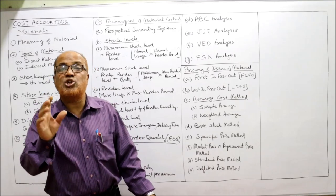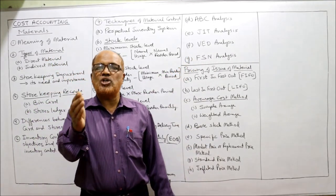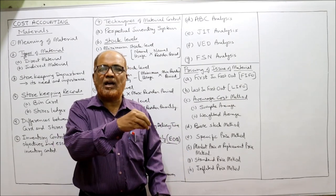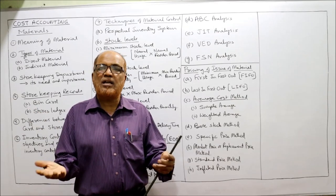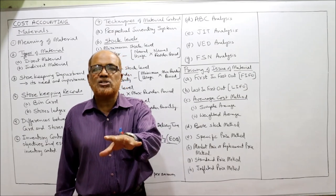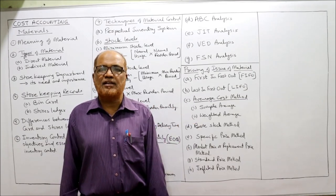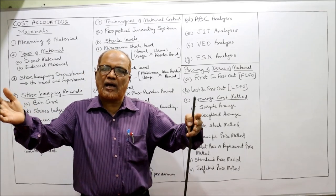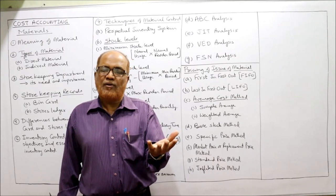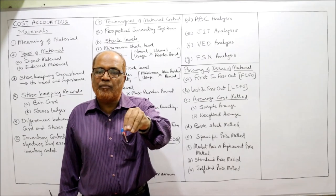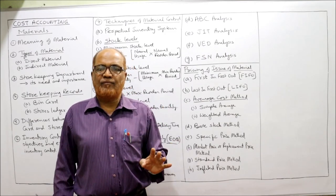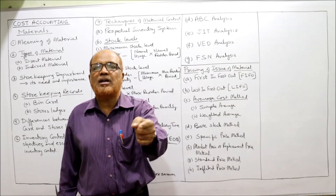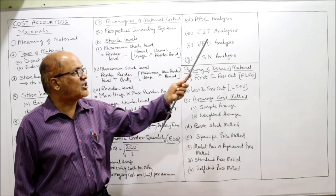Just In Time (JIT) is a technique where some organizations keep no inventory at all. They believe keeping inventory blocks money and incurs unnecessary interest charges. Material is purchased only when it is needed. For example, a car manufacturing company will not purchase all components at once; it purchases each type of material only when required. In this way, the investment in inventory is reduced because we are not keeping unnecessary stock.